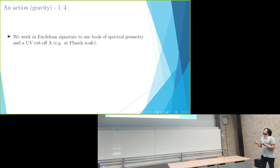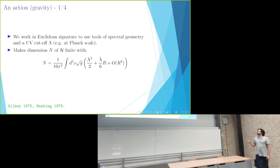So using this as a motivation, we started working in Euclidean signature and defined a path integral formalism from this perspective. We work in Euclidean signature because then we can use certain tools from spectral geometry, and we also introduce a UV cutoff. For example, we could put it at the Planck scale, because then we can also use a result by Gilkey and Hawking that expresses the Hilbert space dimension in terms of a curvature expansion and this cutoff.